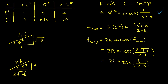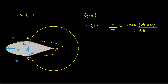To conclude, we have φ* as the optimal launch angle and d_max as the maximum firing range. Now let's calculate the flight time. For that we will use Kepler's second law, which states that the area swept out by the radius vector is proportional to time.